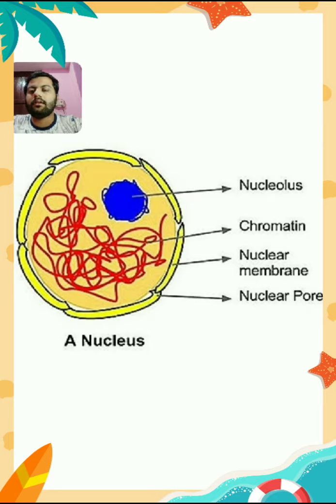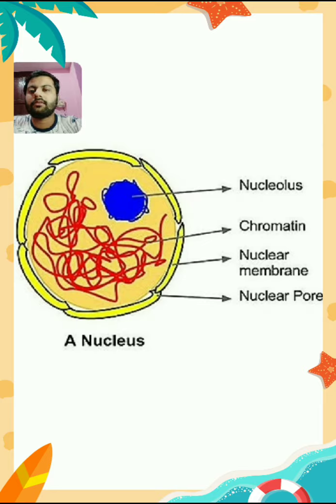We just started what are the criteria to identify the true cell. Inside that, we studied that there are three components inside the cell through which we can determine if a cell is true or not. Those three basic components are: first, cell membrane; second, cytoplasm; and third, nucleus. We studied up to cytoplasm.